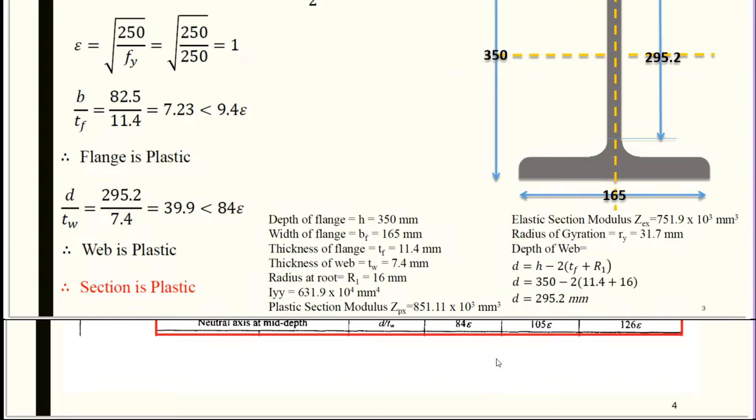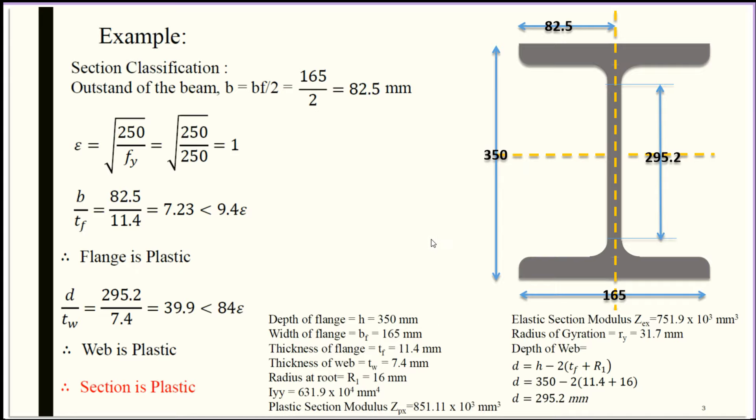In this cross-section, the top flange is the compression flange and the bottom flange is the tension flange. The total depth is 350 mm and width of flange is 165 mm.